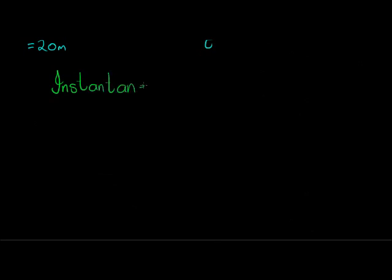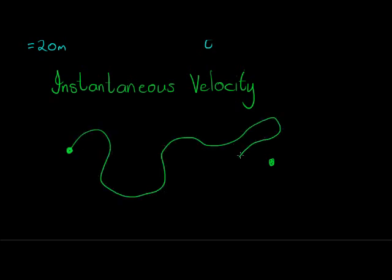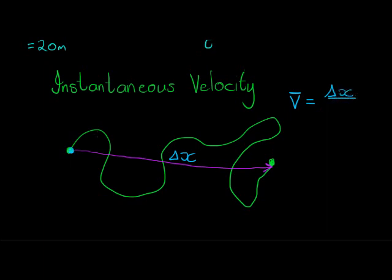Instantaneous velocity - that's exactly what the word suggests, the velocity in an instant. Imagine something is traveling from this point to that point, taking this route. We know that route is the distance, and the displacement is from this point to that point, a straight line. The average velocity will be calculated by taking this displacement, the change in displacement, and dividing it by the time it took to do this whole displacement process.